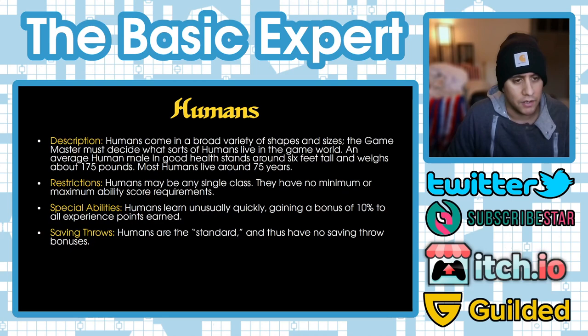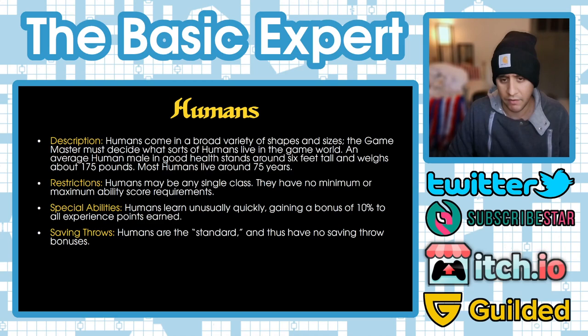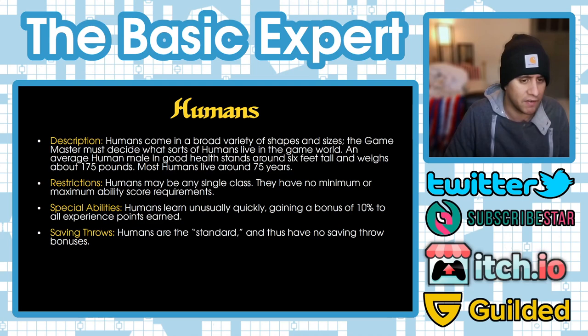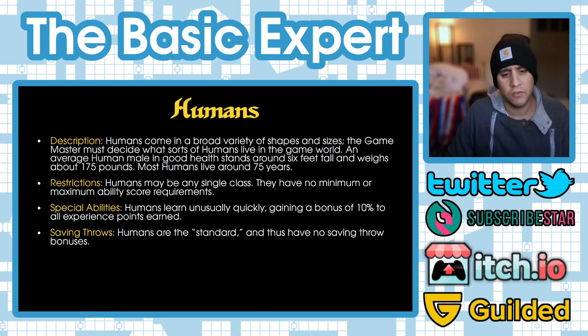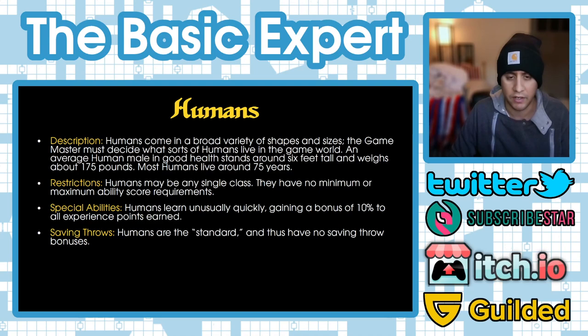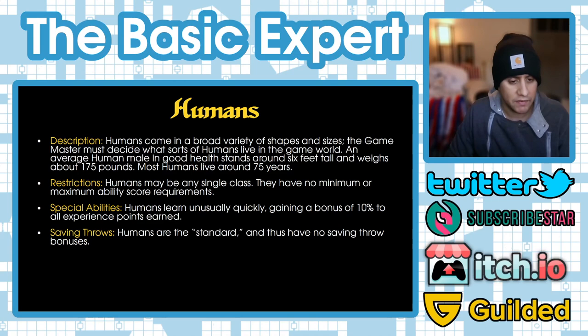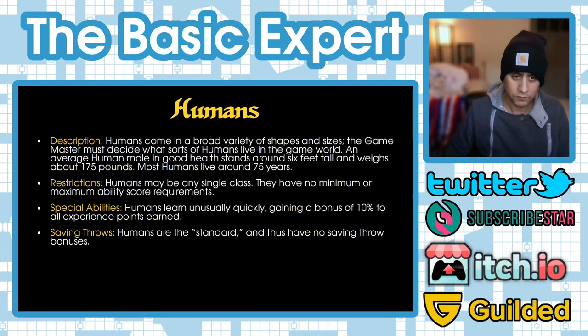Humans come in a broad variety of shapes and sizes. An average human male in good health stands around six feet tall and weighs 175 pounds, living about 75 years. Humans may be any class with no minimum or maximum ability score requirements. Special ability: humans gain a bonus of 10% to all experience points earned — which in our current game the dwarf is a bit jealous of. Saving throws are standard, whatever the saving throw chart says.